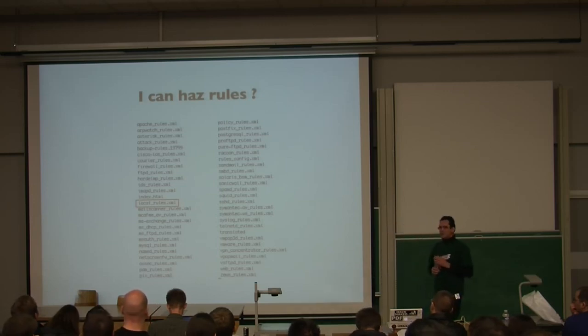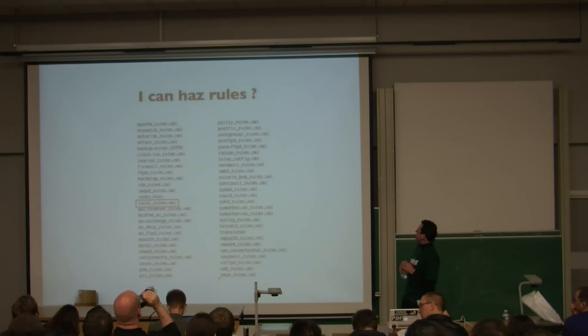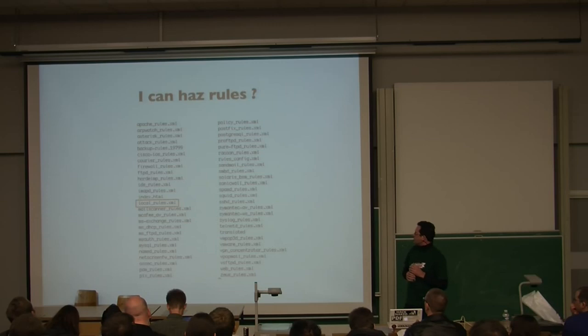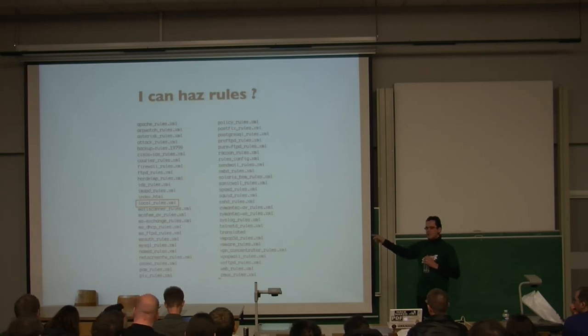These are the rules that are, by default, included in the OSSEC package. So, you see, there are Solaris rules, SonicWall, Cisco, Asterisk, Apache. And you can create, using the local rules, you can create exceptions or extensions on the existing rules. One thing to note, if you're going to change a rule in one of the application-specific rules, those are going to be overwritten during upgrade, but the local rules XML file will never be overwritten.